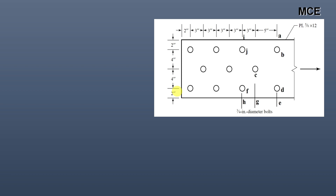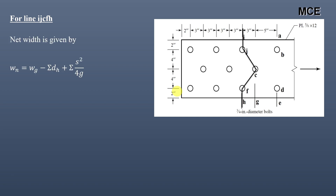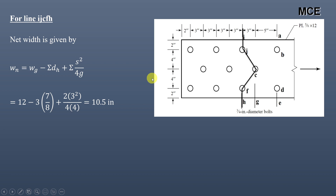The next failure line we consider is along I-J-C-F-H. This is also a staggered failure line, so the net width is given by the staggered formula. W_G = 12, it passes through three bolt holes, the staggered pitch S = 3 inch, and the gauge distance G = 4 inch. Putting in these values gives a net width of 10.5 inch.